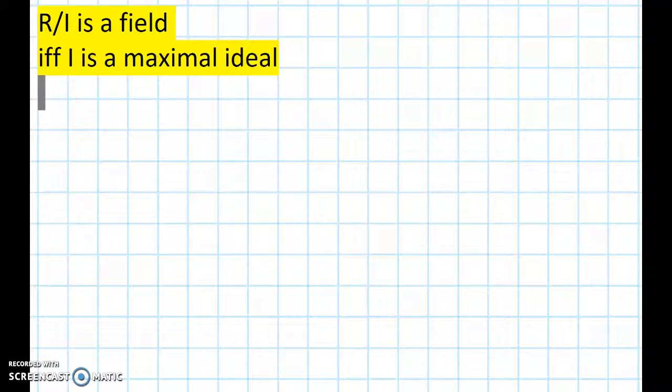Hello everybody! In this mini-lecture we are going to prove the following result: R over I is a field if and only if the ideal I is a maximal ideal.